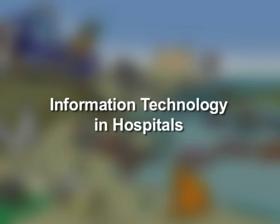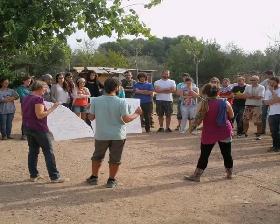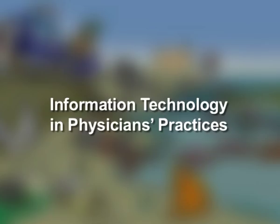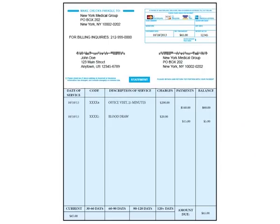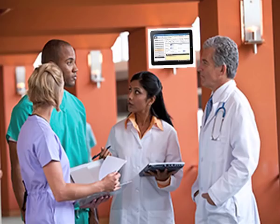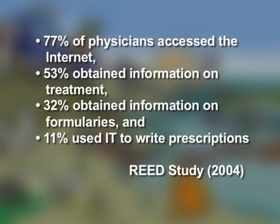Relatively little is known about the level of diffusion of information technology in hospitals and the strategies hospitals take when making IT investment decisions. The existing information about IT diffusion comes from voluntary surveys. Physicians are more likely to use IT for administrative functions such as billing, claim submissions and scheduling, than for clinical functions such as electronic health records, clinical decision support, or access to formularies. According to a 2004 study by Reed, 77% of physicians accessed the internet, 53% obtained information on treatment, 32% obtained information on formularies and 11% used IT to write prescriptions.